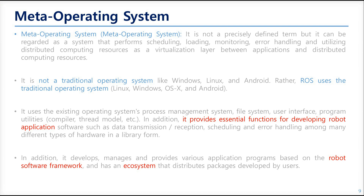It provides essential functions for developing robot applications. If you want to understand what essential functions are, just think of it as a toolbox. ROS provides various tools for developing robot applications — you can use its tools for handling errors and monitoring data from connected devices like motors and sensors. After development, you can make it as a ROS package and release it to the server, or you can use a package distributed by someone else to make your package much better. In this process, the ecosystem can be created.